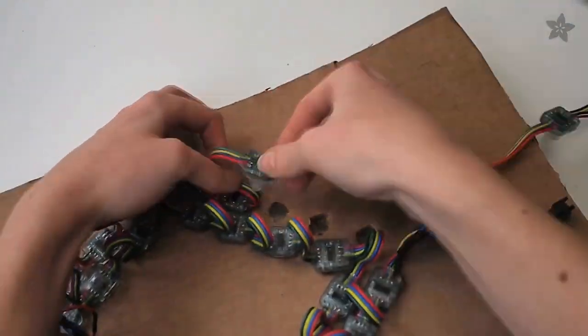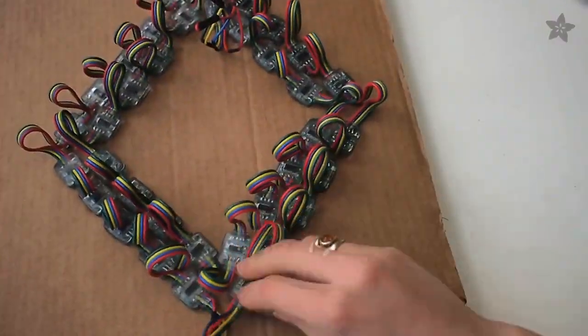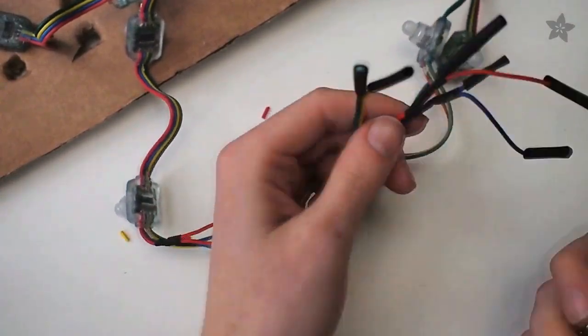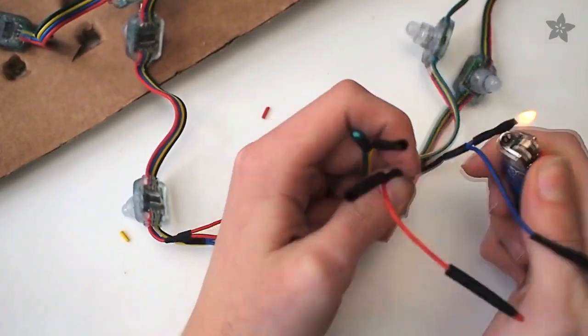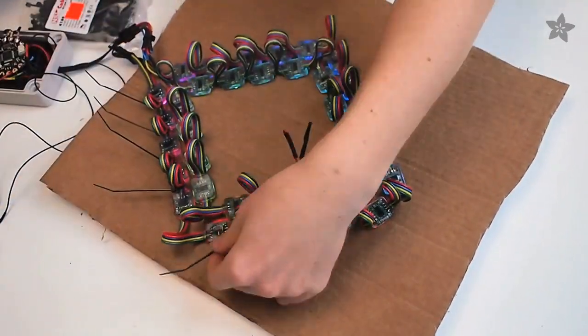And when you get to the end of your design, if you have extra pixels, you can just cut them off, but then make sure to fold over and heat shrink all the loose wire ends so they don't ever short out inside the bag.